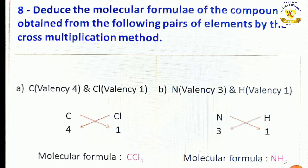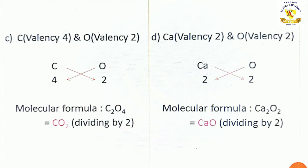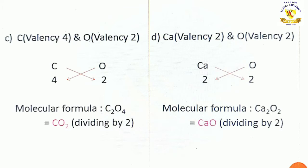Question number 8: derive the molecular formulae of the compound obtained from the following pairs of elements by cross-multiplication method. Children, the valencies of some elements are given. You must be familiar with the cross-multiplication method. Some examples are given of carbon and oxygen, and calcium and oxygen. With the cross-multiplication method, find out the molecular formula. I hope all these notes are useful for you. Please write it down in your Science classwork book and maintain the notes properly, children.